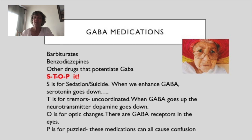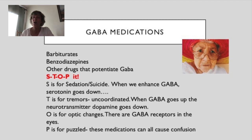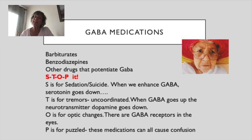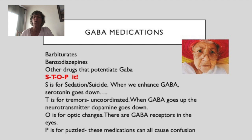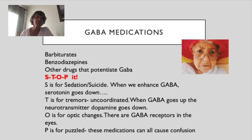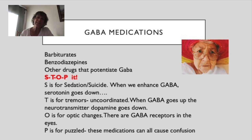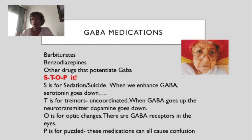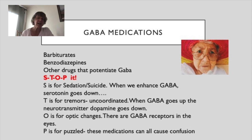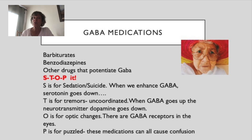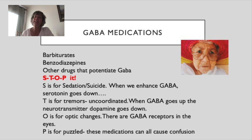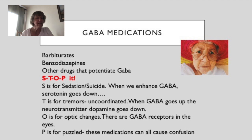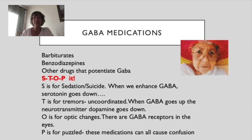S is for sedation — these drugs can cause drowsiness and dizziness — and also suicide. As we increase GABA we may decrease serotonin, our mood-related neurotransmitter, which is why these medications can cause suicidal ideation. T is for tremors or uncoordinated movement. As we increase GABA we may decrease dopamine, which is key for coordinated movement. Individuals with Parkinson's have low dopamine and lose coordinated movement — that's another side effect you may see with GABA medicines.